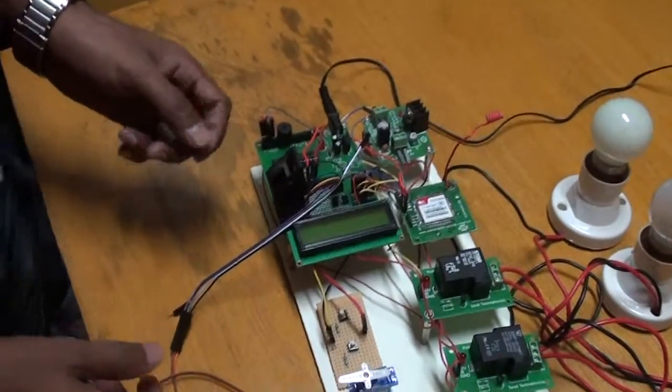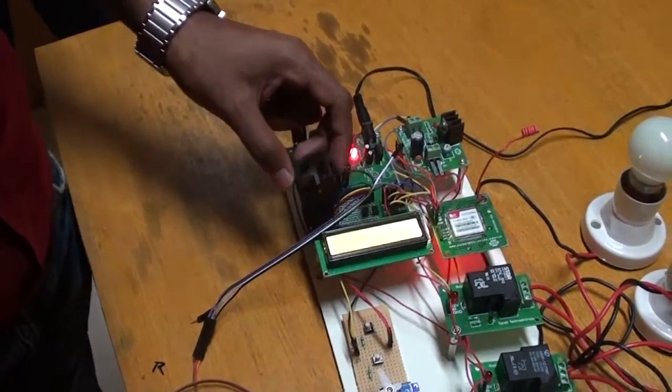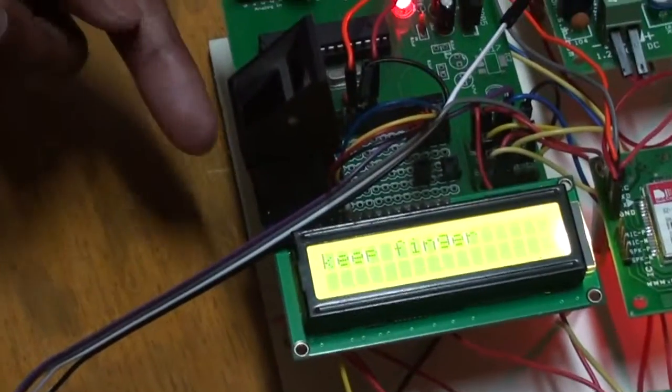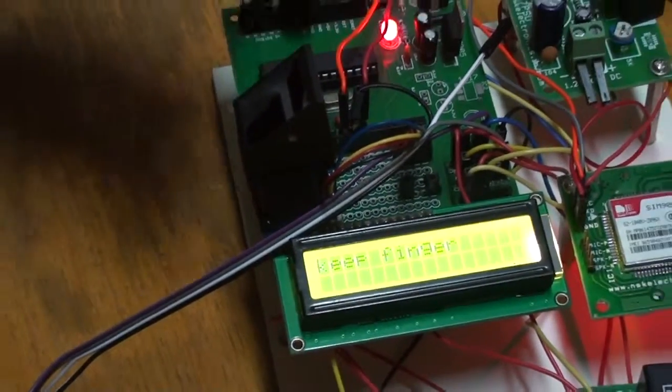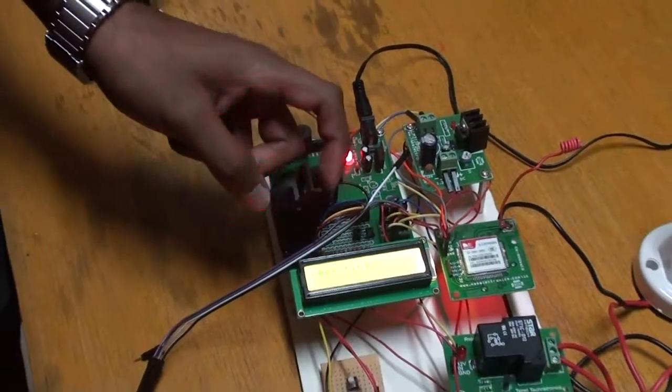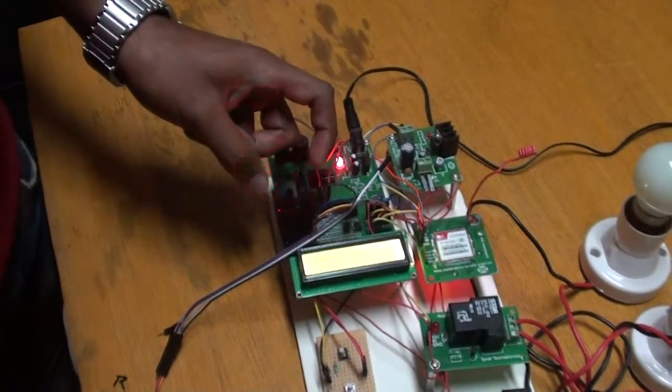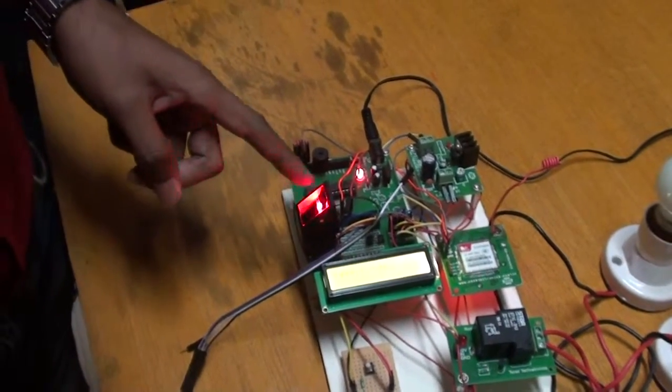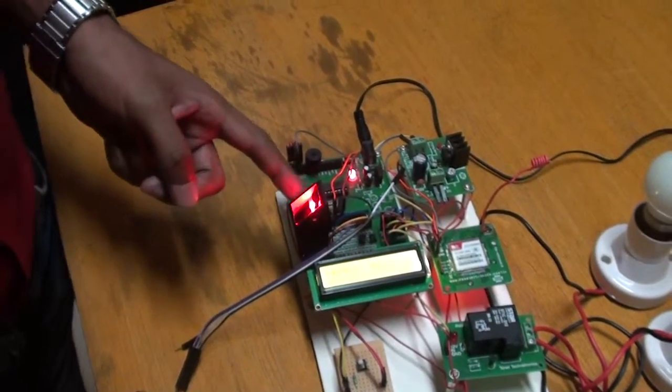First, we need to have a database of fingerprints inside the fingerprint scanner. This scanner has the database inside itself. The person places their finger here and the scanner will scan it. The microcontroller will be used to match the fingerprint with the database stored in the scanner.